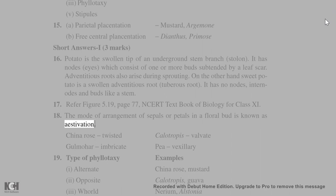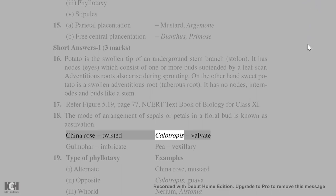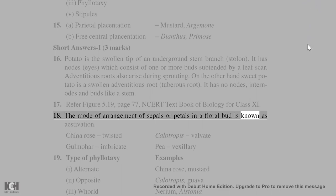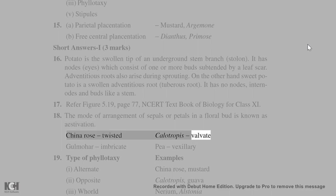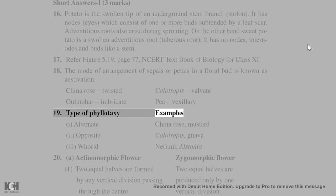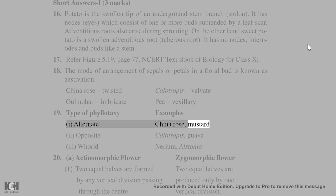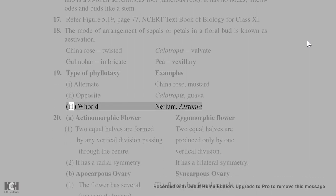18. The mode of arrangement of sepals or petals in a floral bud is known as aestivation. China rose: twisted. Calotropes: valvate. Gulmohar: imbricate. Pea: vexillary. 19. Types of phyllotaxy: (1) Alternate — China rose, mustard. (2) Opposite — Calotropes, guava. (3) Whorled — Nerium, Alstonia.